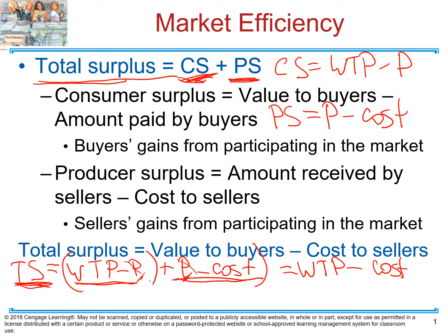So if you have a problem on the test, you can find total surplus in two ways: find consumer surplus first, find producer surplus second, and add them up — or you can simply take willingness to pay minus cost. On the exam, they may refer to total surplus as value to buyers minus cost to sellers, which means the same thing.